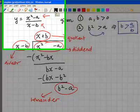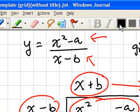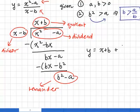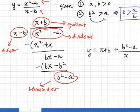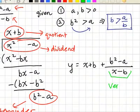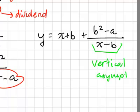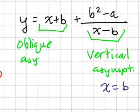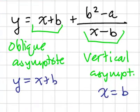So this is the final result of the long division. This rational function will therefore become y equals x plus B plus (B squared minus A) divided by (x minus B). Now, as you already know, your vertical asymptote is obtained from the denominator. So the vertical asymptote equation is x equals B. The other one is your oblique asymptote, with equation y equals x plus B.